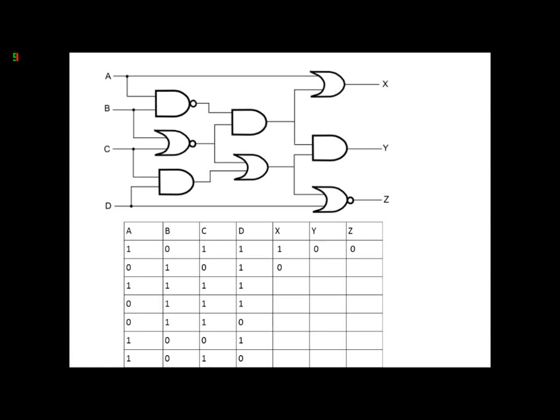For Y, it would be B and C, and this is a NOR gate. So B is 1, so that would also be 0. And C and D would be 0, so Y is also 0. So Z, D is 1, which means that Z would have to be 0 as it is a NOR gate.